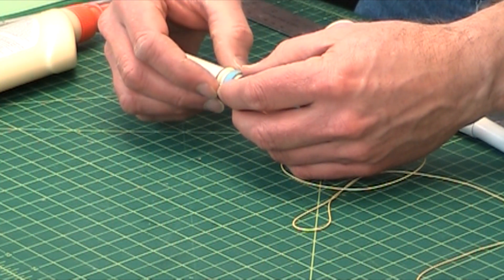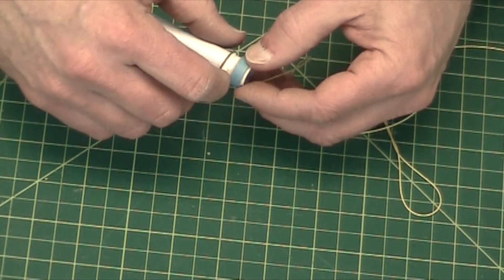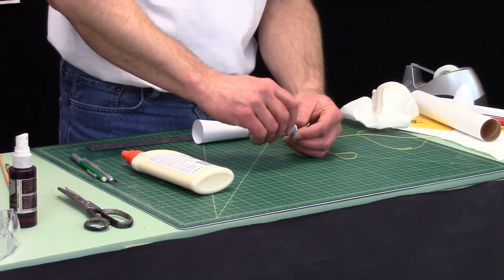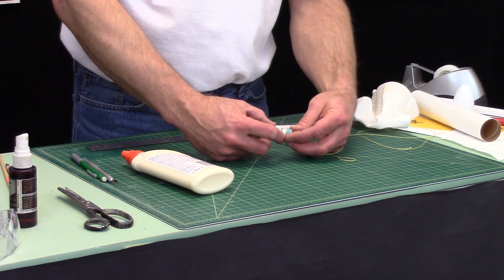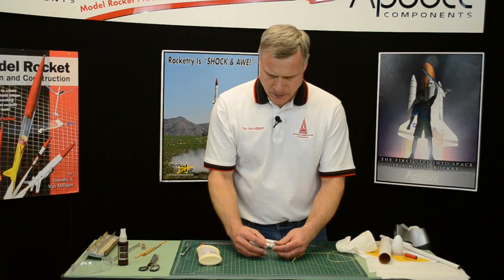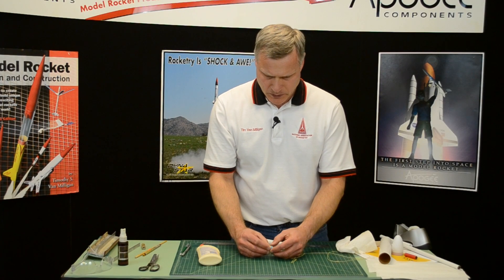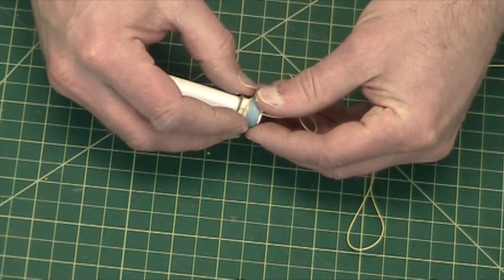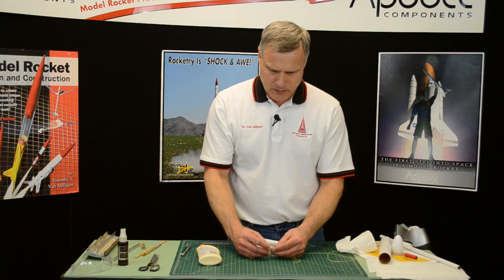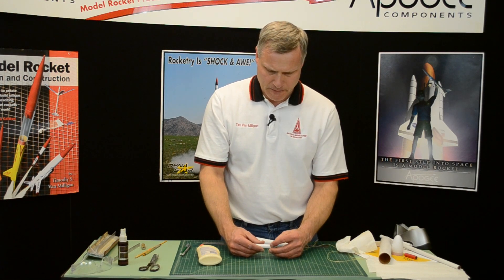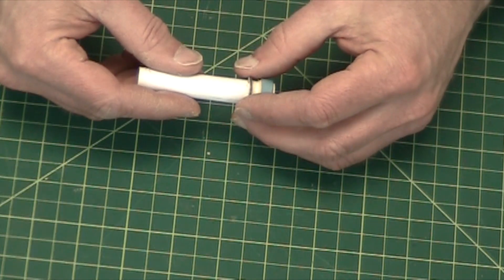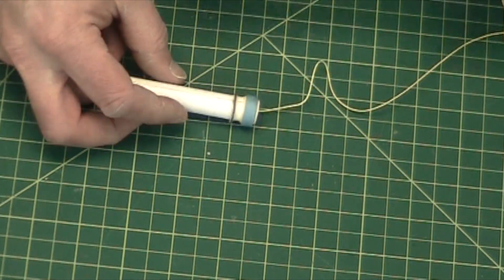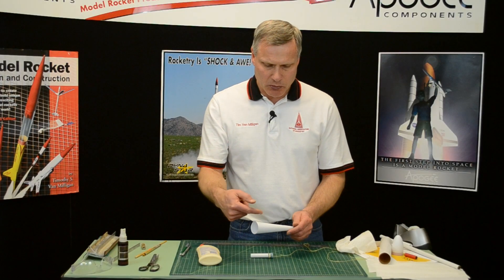I'm going to go ahead and do that now. Spin it around. I have too much glue, so I'm trying to take a little bit off. Make sure it's nice and straight. And then we're just going to go ahead and set that aside to dry. The next time we'll pick this up is when we put it into this tube.